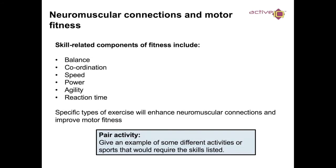Regarding neuromuscular connections and motor fitness: skill-related components of fitness include balance, coordination, speed, power, agility, and reaction times. Specific types of exercises will enhance neuromuscular connections and improve motor fitness. Think about the types of activities that are skill-related components of fitness and would help motor connections and motor fitness.